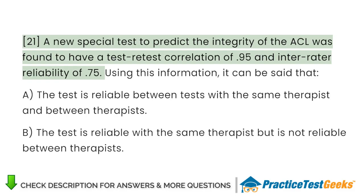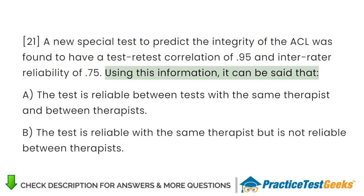A new special test to predict the integrity of the ACL was found to have a test-retest correlation of 95% and interrater reliability of 75%. Using this information, it can be said that...